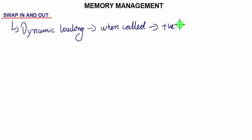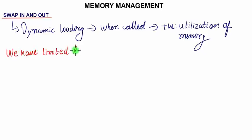Better utilization of memory. Now how does this thing work and what are the factors? Let's understand factors first. We have limited RAM, that is random access memory. We have limited resource. We have unlimited processes.